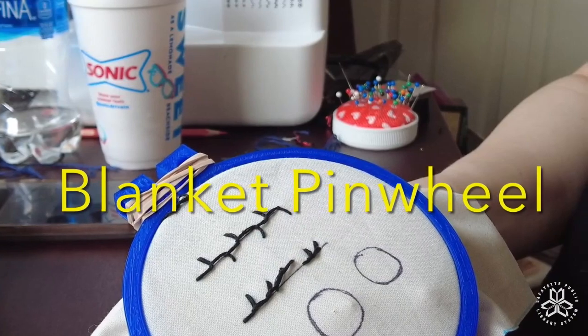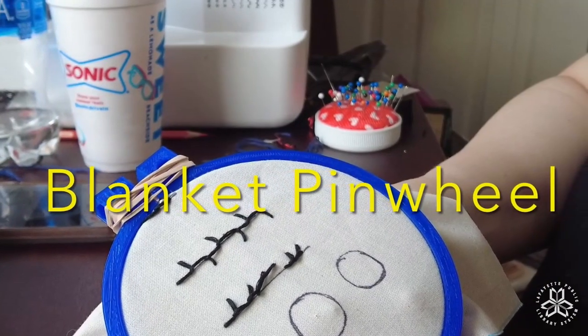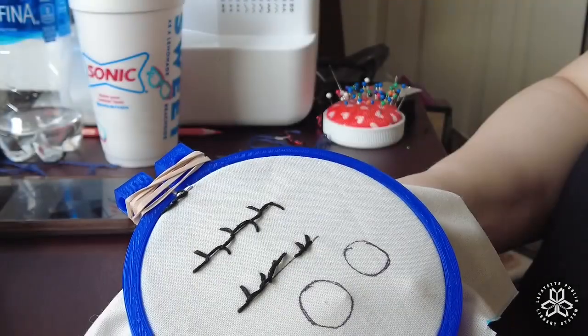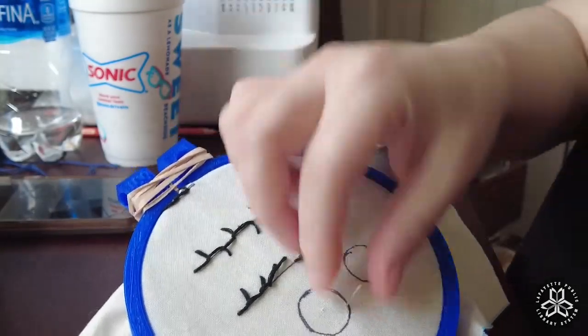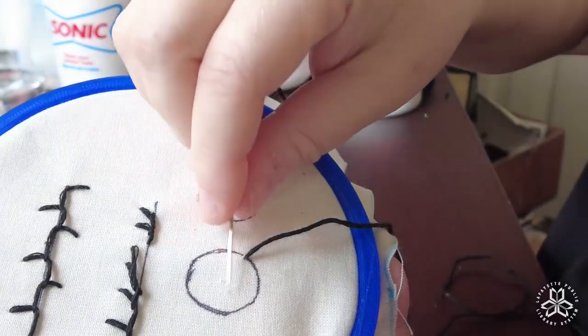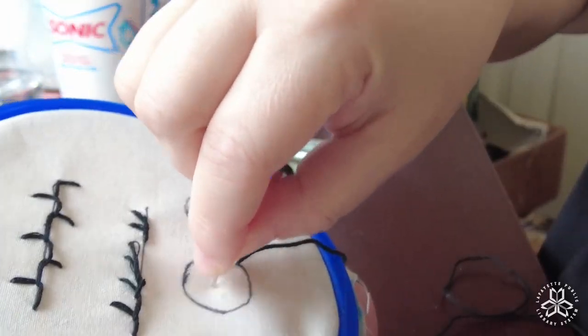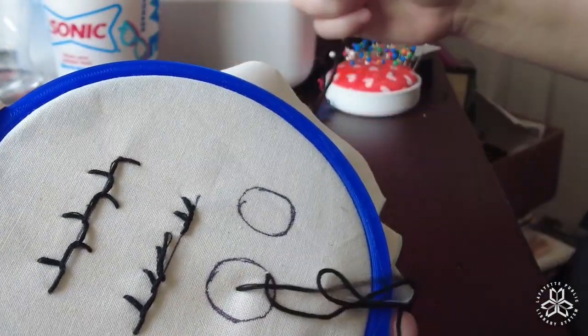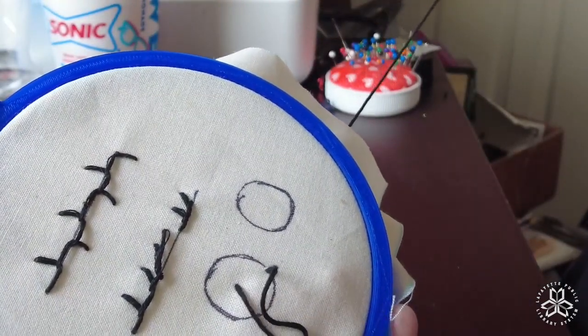Lastly, we have the blanket pinwheel. As the name applies, this is going to be very circular. It's going to be wheel-like in that it's circular and has spokes in the middle. I've started, I've drawn a circle and I started at any point on my circle that I wanted, coming up from the back and then going down through the middle and creating a little loop.